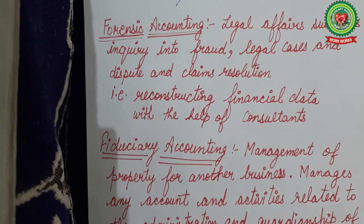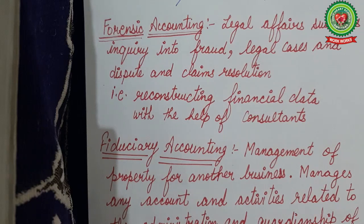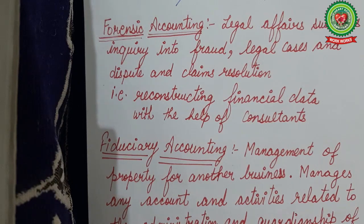Next is forensic accounting. The word 'forensic' — you remember it from shows like CID — a forensic lab does post-mortem and diagnoses the reason of death, who may have killed, and when. Similarly, forensic accounting is related to legal affairs and inquiry. Accountants must conduct inquiry and inspection into why frauds occurred, resolve disputes, solve legal cases, and handle claim resolution. They reconstruct financial data — all data is made again with the help of consultants.